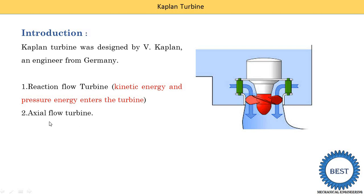Second point: according to the direction of water supply — that means in which direction of the runner water is supplied. This red part is known as a hub, and this is the axis — the vertical axis of the shaft. Parallel to the axis of the shaft, water is supplied; that is known as the axial direction. When deciding the direction, we consider the direction at which water is supplied to the runner. Here it is radial direction entering the casing, but on the runner it is supplied in axial direction, so it is considered an axial flow turbine.